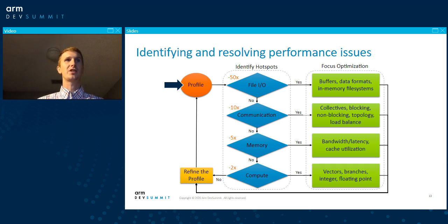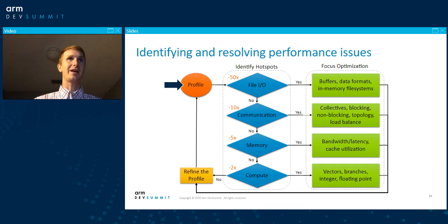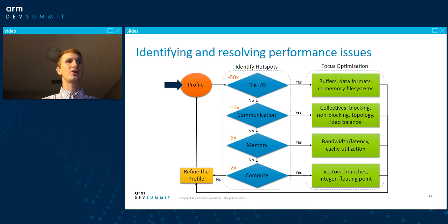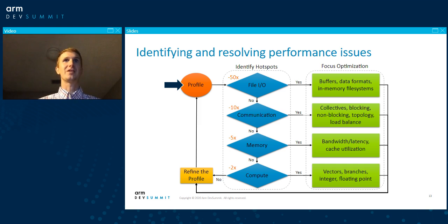It doesn't really matter what tool you use as much as the tool needs to provide detailed information about the different components of application performance — the time the application spends in file I/O, communication, memory, or compute. Do an initial high-level profile with minimum overhead, then look at what the hotspots are. Is the application spending a lot of time in file I/O, for instance? Once you've identified one major hotspot, focus on the single aspect of performance most relevant to that hotspot.